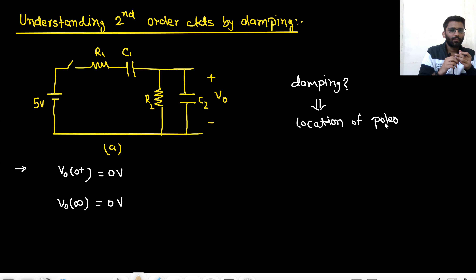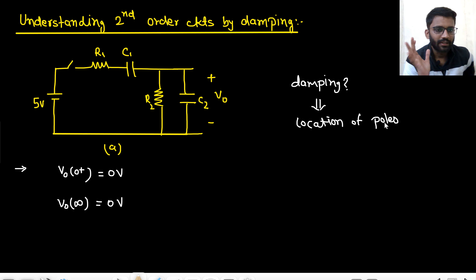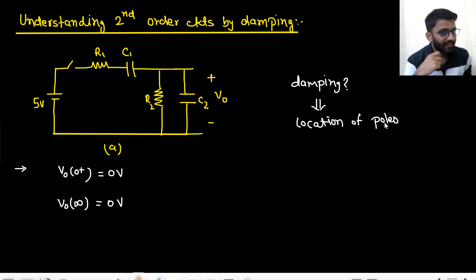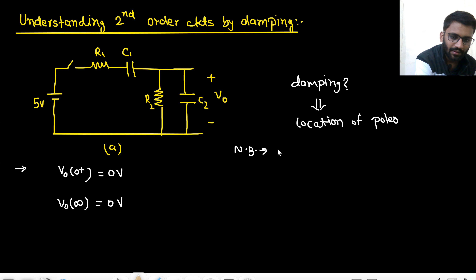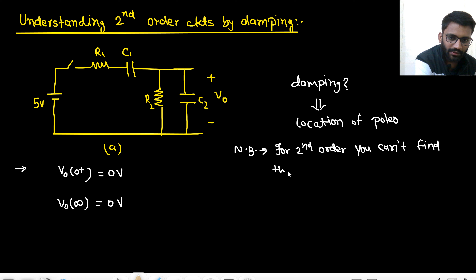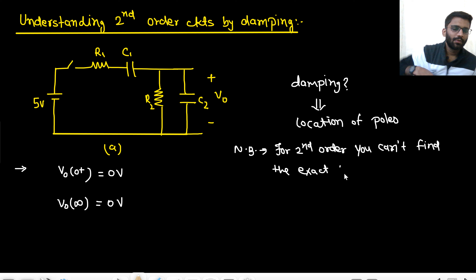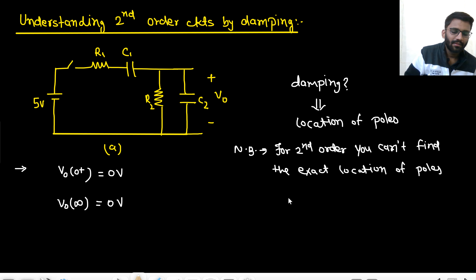I will tell you a method to find the location of poles for a second order circuit. For a second order circuit, you can't find the exact location of poles intuitively. Of course, by transfer function you can find them, but you can't find the exact location intuitively. By transfer function you can certainly find them, but intuitively you can't.